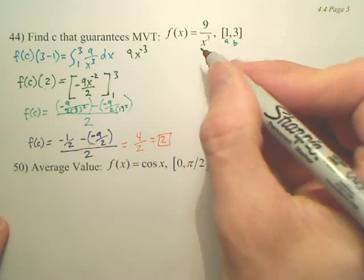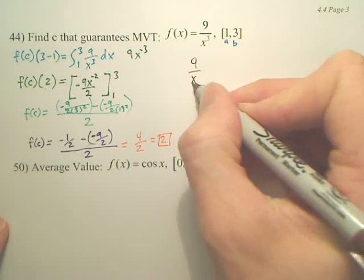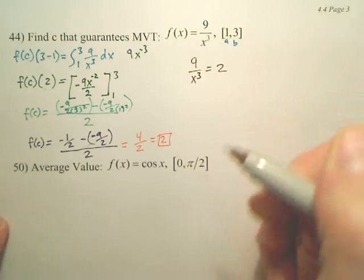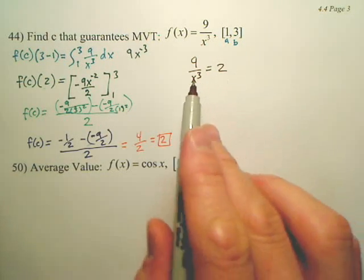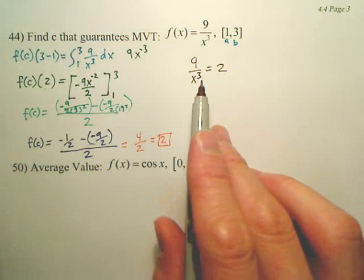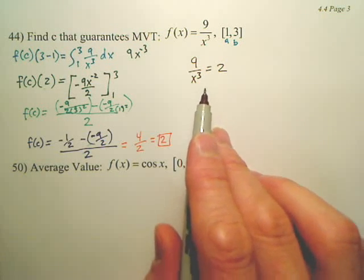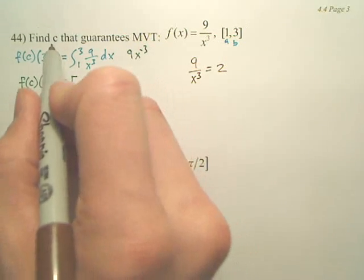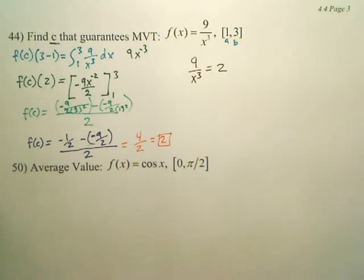So I take my original equation, 9 over x to the third, and set it equal to 2. Because don't I want to find out where my original equation has an output of 2, and solve for x? So x will be where a C value that has an output of 2.